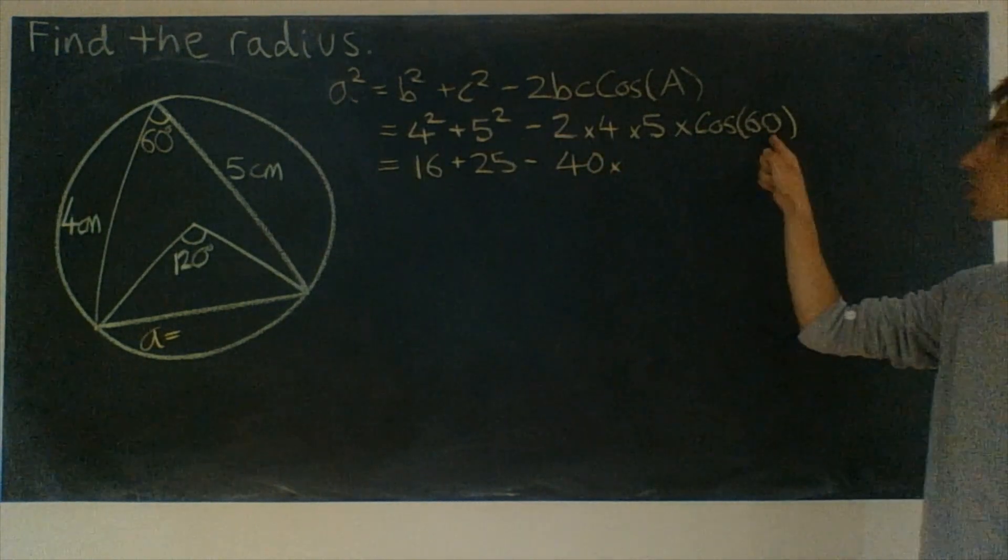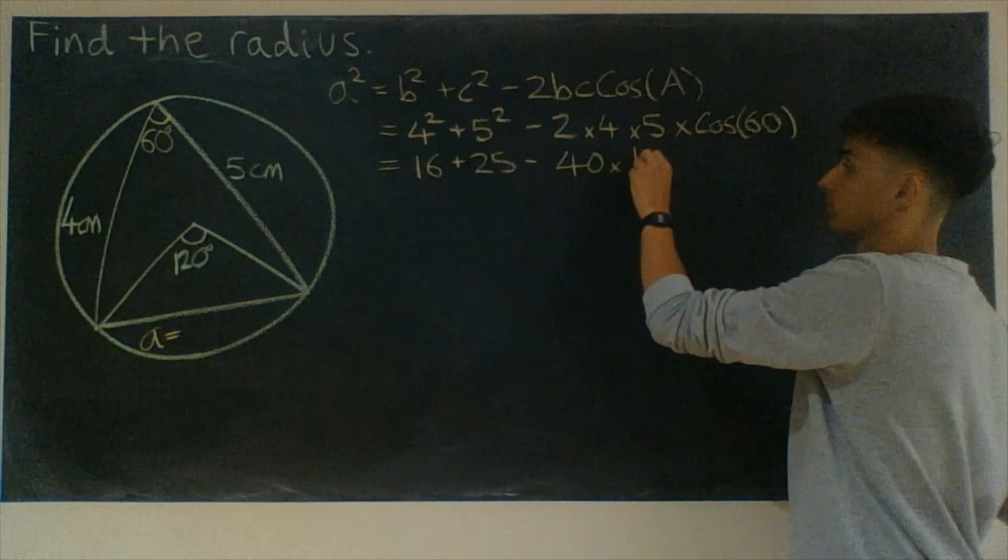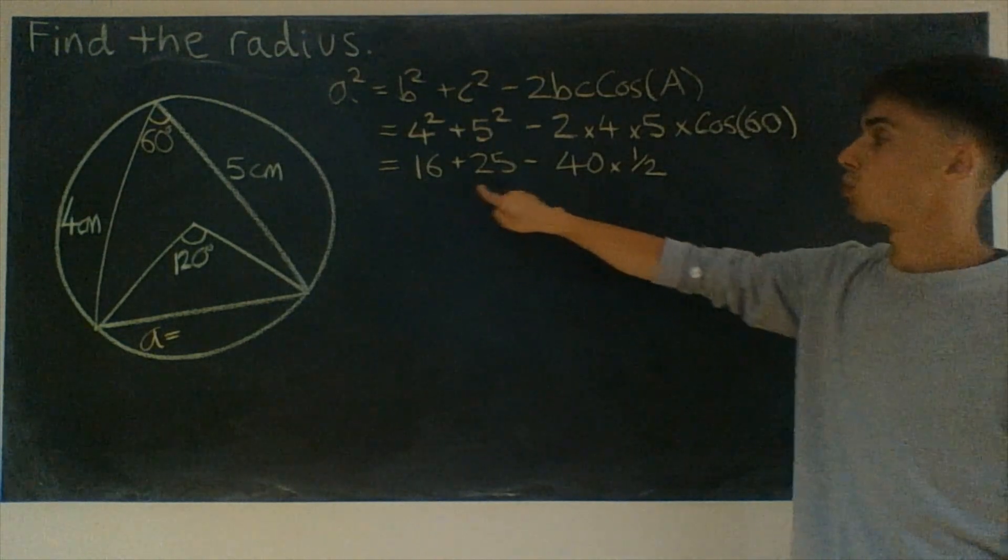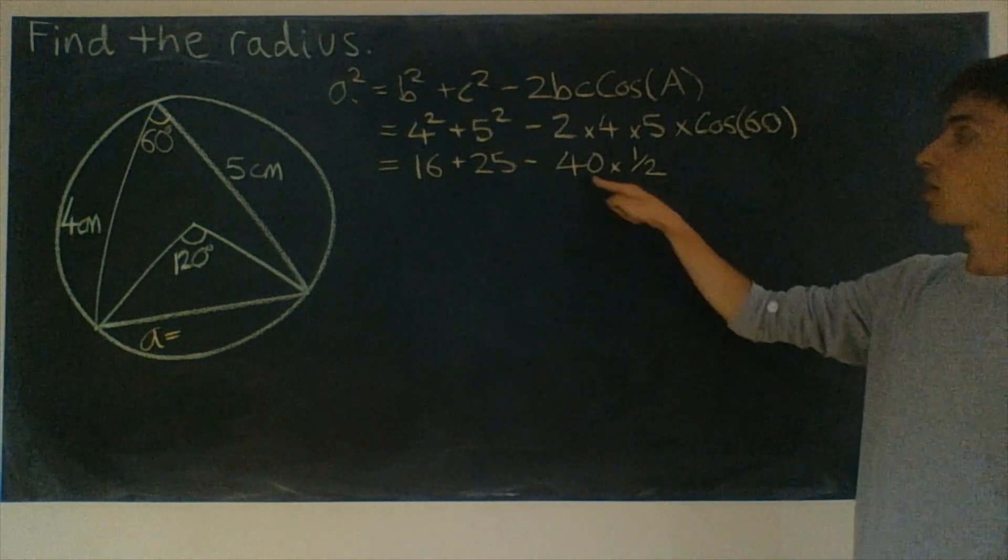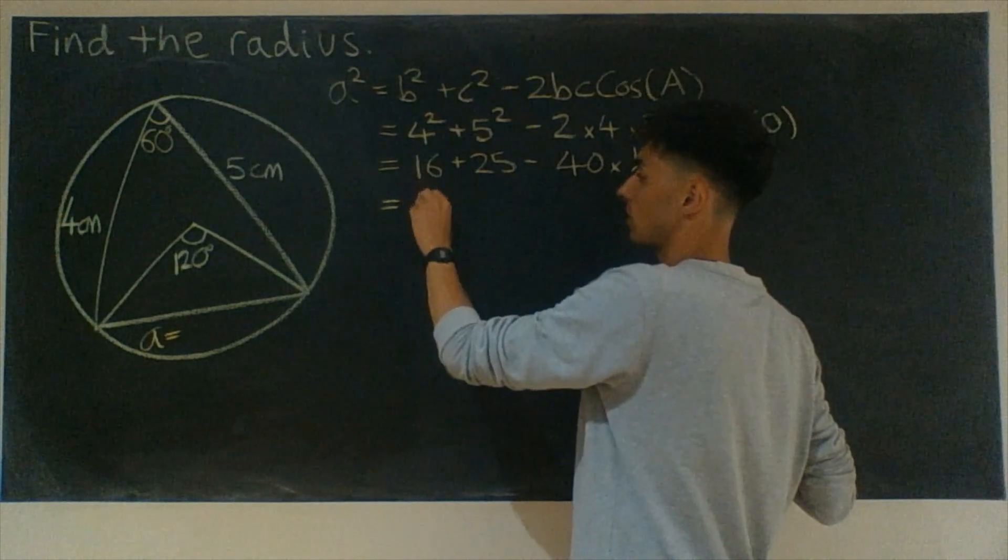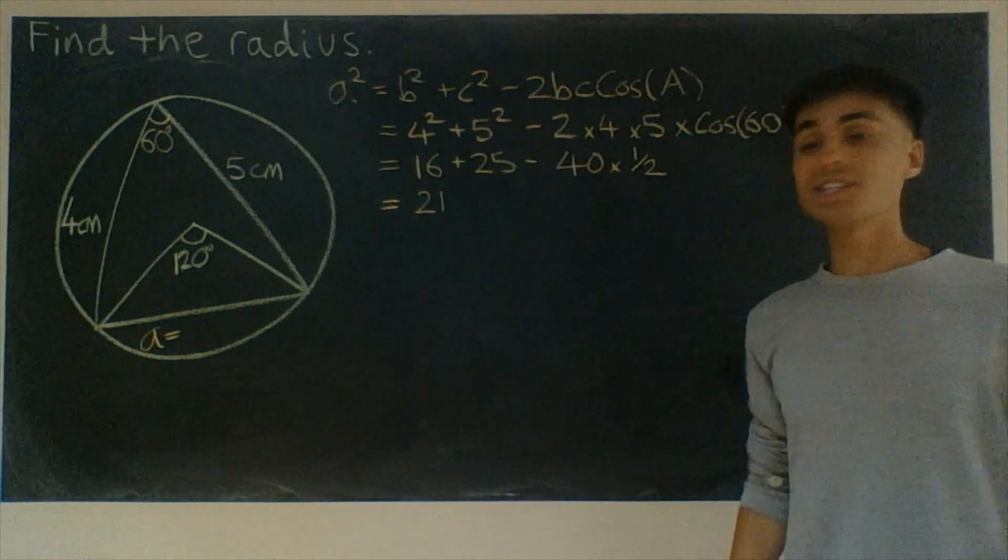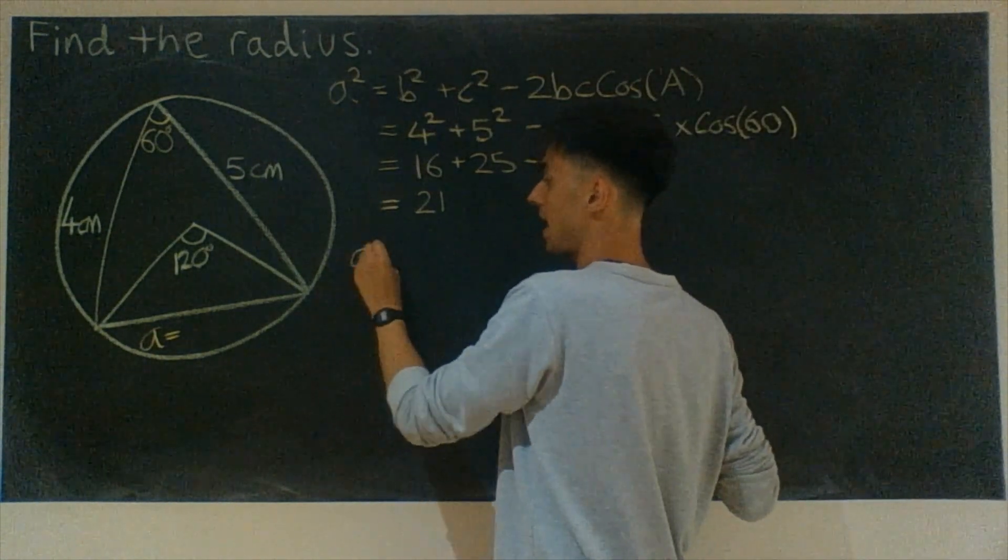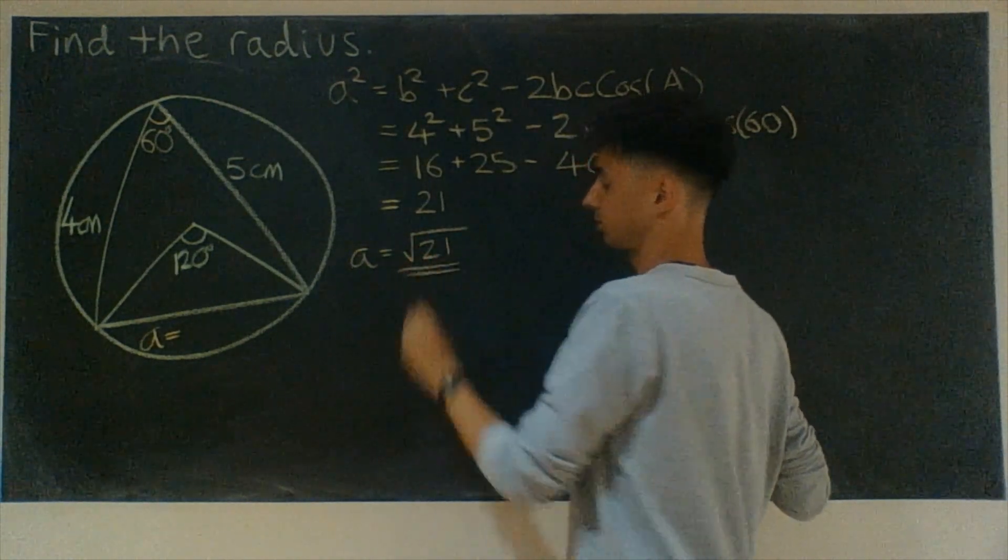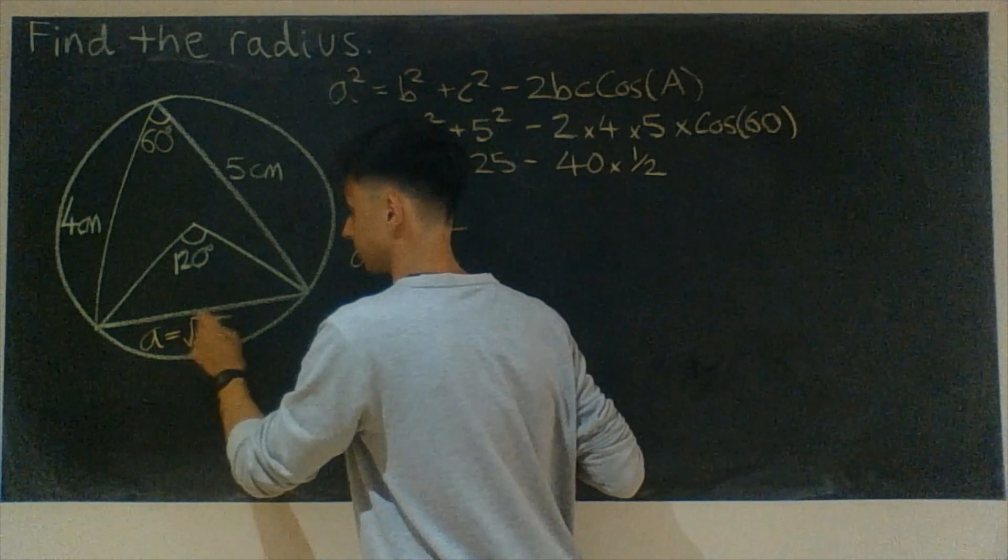But we need to remember that cosine of 60 is a really nice exact trig value. It's exactly one half. So 16 plus 25 would be 41. And we need to take away 40 times a half, which would be 20. So 41 take away 20 should give us 21. And remember that that was a². So if a² is 21, then a must be the square root of 21. So a is the square root of 21.